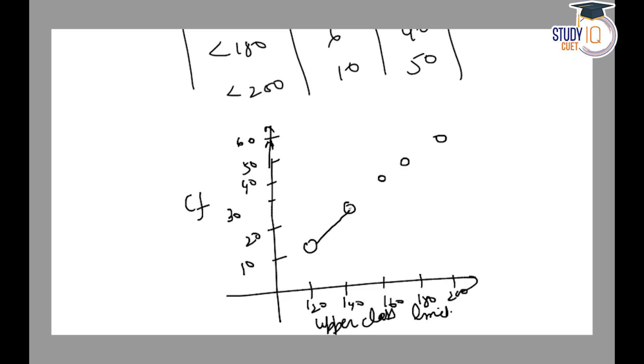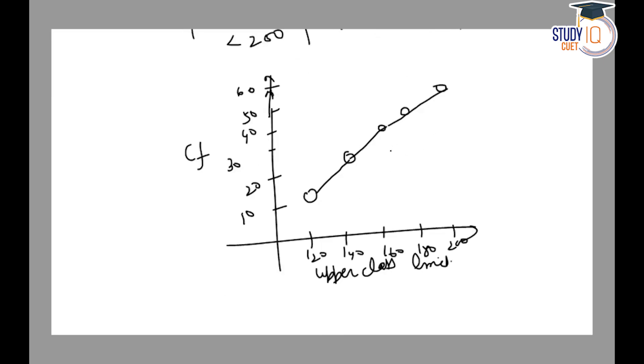This becomes our cumulative frequency versus upper class limit curve.